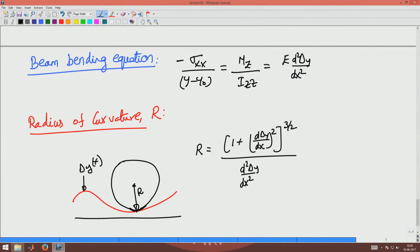Now what happens is we approximated theta, tan theta which was dΔy/dx, as being approximately equal to theta because we assumed dΔy/dx to be small or of order 10^(-3) or less. Hence, compared to 1 here, this (dΔy/dx)² will be small. So I can approximate this as 1/(d²Δy/dx²).